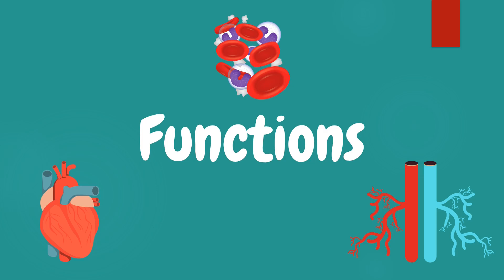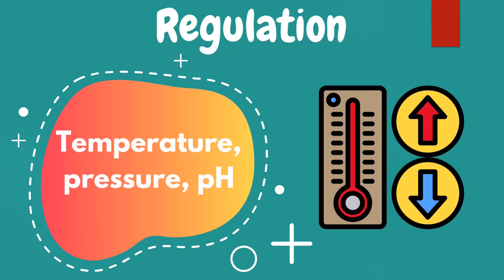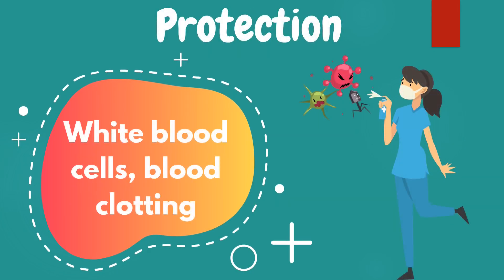Why is the circulatory system important? Let's enumerate and discuss its functions. First is transportation — it transports gases, nutrients, and hormones to our body, and it also eliminates waste products. Second is regulation — it regulates and sustains body temperature, pressure, and acidity.